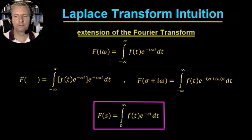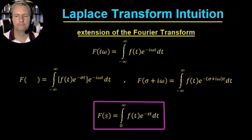If we write down the Fourier transform: F of iω is the integral from minus infinity to infinity of our function f(t) times e to the minus iωt dt. So we're going from the time domain to the frequency domain.